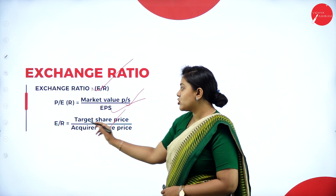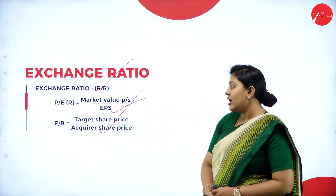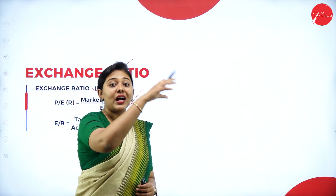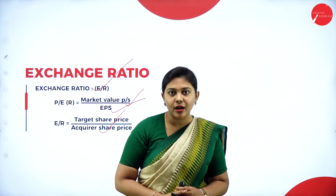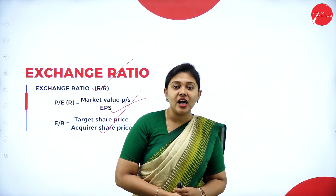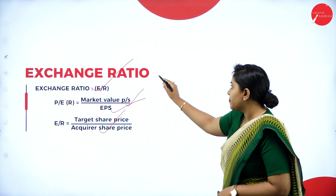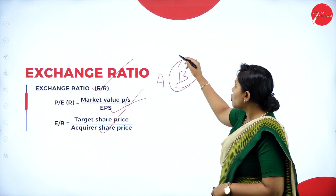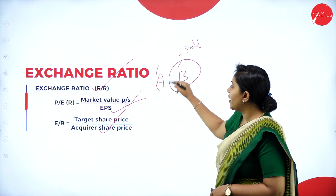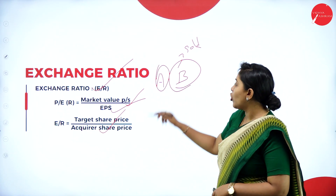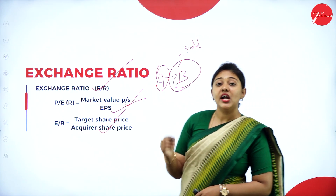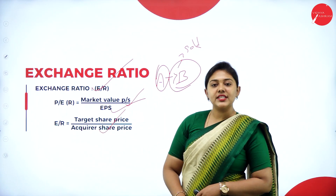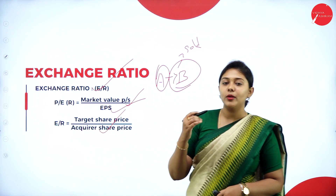The exchange ratio formula is: target share price divided by acquirer share price. The company that acquires another company becomes the acquirer company; the other company becomes the target company. For example, if A and B company exist and B company is acquired by A company, then A becomes the acquirer and B becomes the target company.